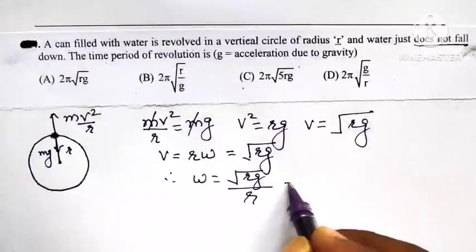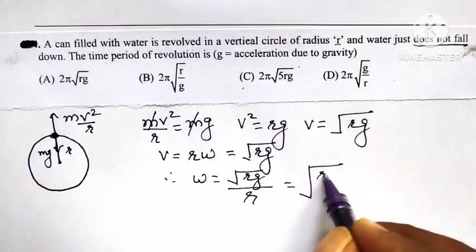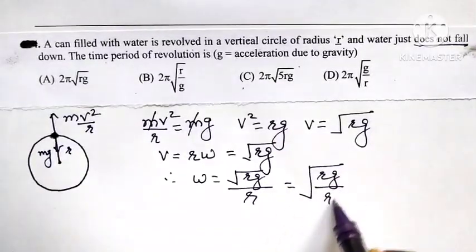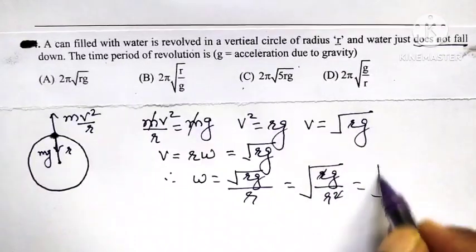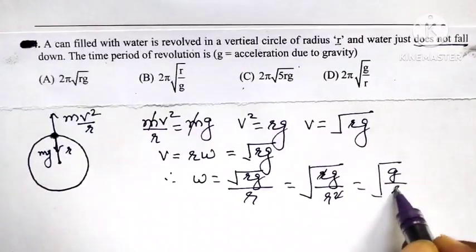When this r is taken in square root, it becomes under root of rg divided by r. So, one r gets cancelled. So, this is under root of g divided by r.